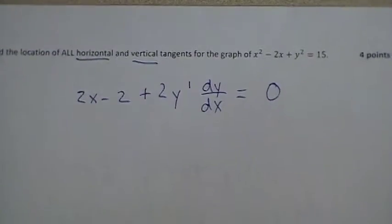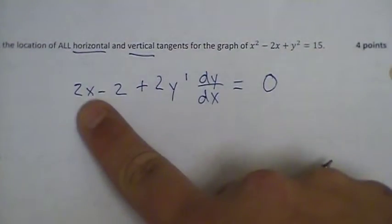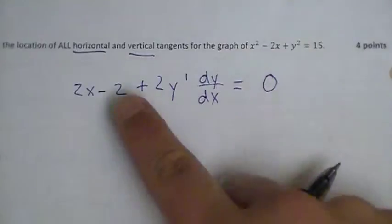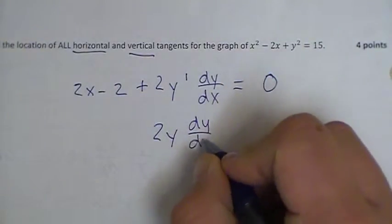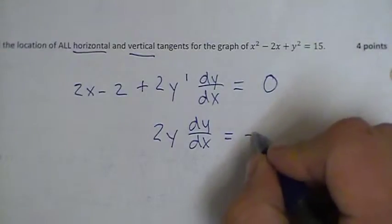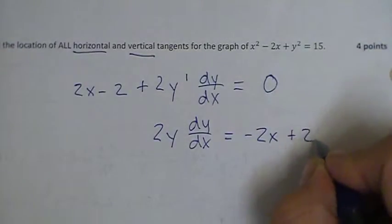We're looking to solve this for dy/dx, so we would move this to the right side of the equal sign, and move this to the right side of the equal sign, and we'd be left with 2y dy/dx equals -2x + 2.